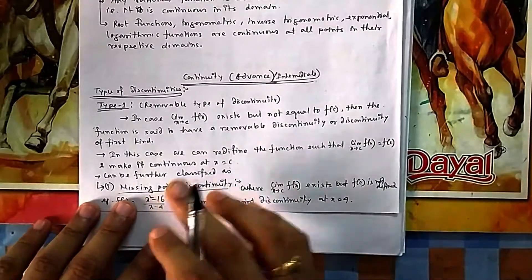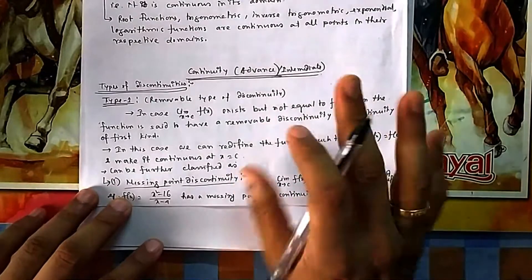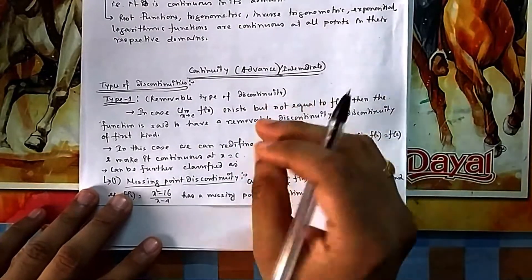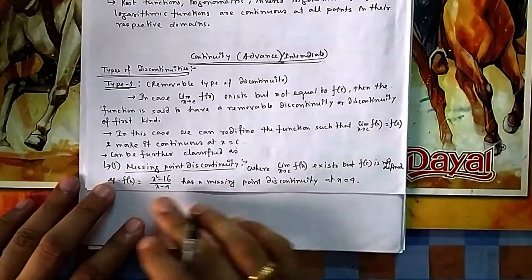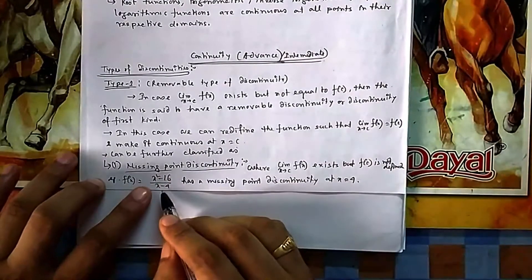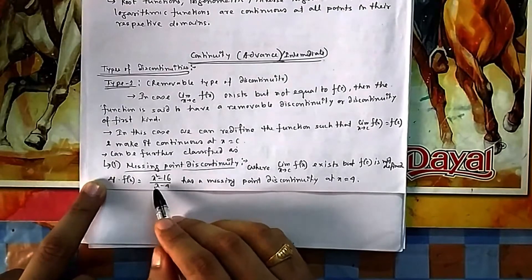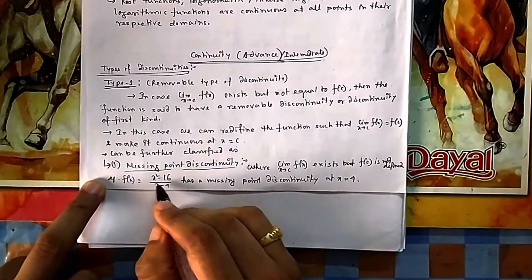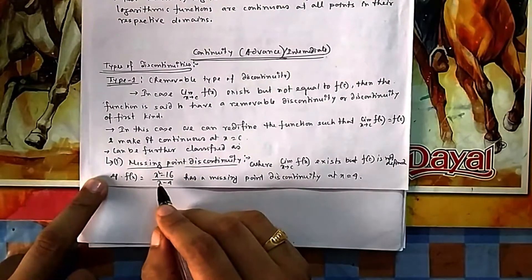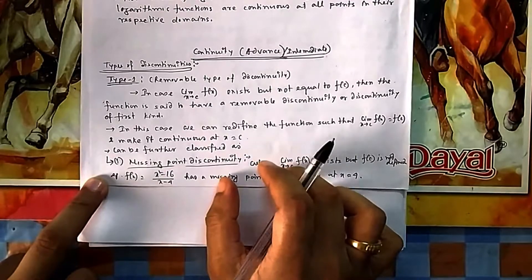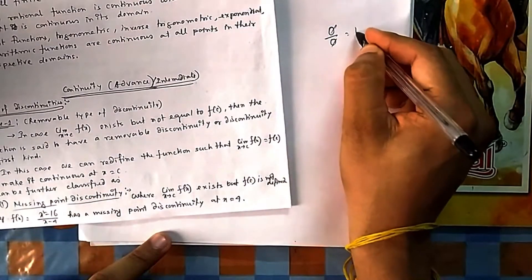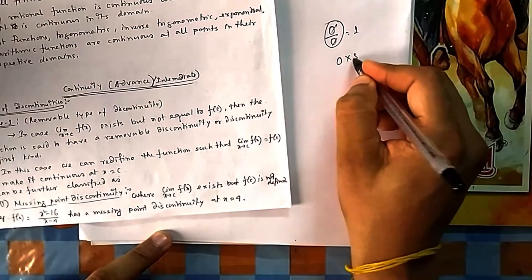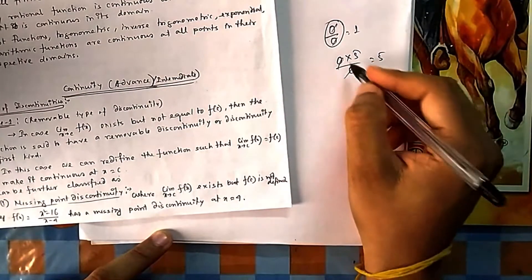The first sub-case is called missing point discontinuity, where f(c) is not defined at that particular point. For example, suppose a function is given such that at x = 4 it becomes undefined. You cannot cancel the expression at x = 4 because that gives 0/0, which is undefined. Even though you might have cancelled such expressions in earlier classes, technically x must not equal 4 — 0/0 is undefined, so you cannot cancel it.